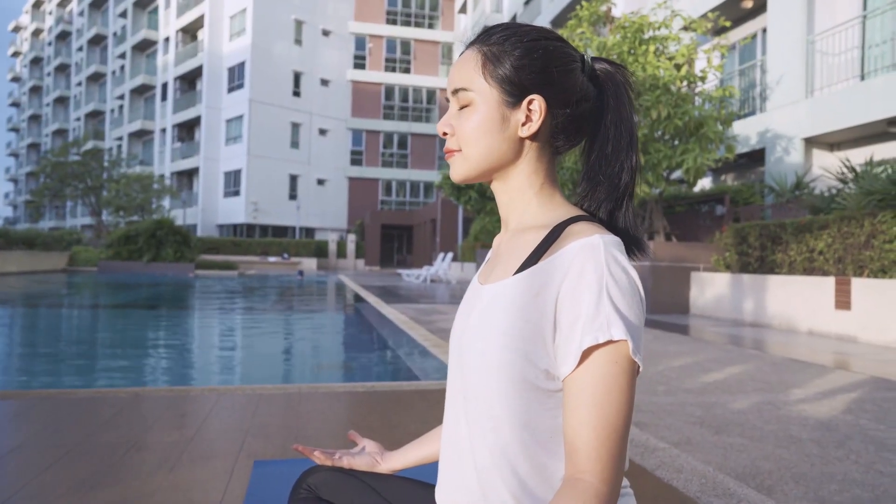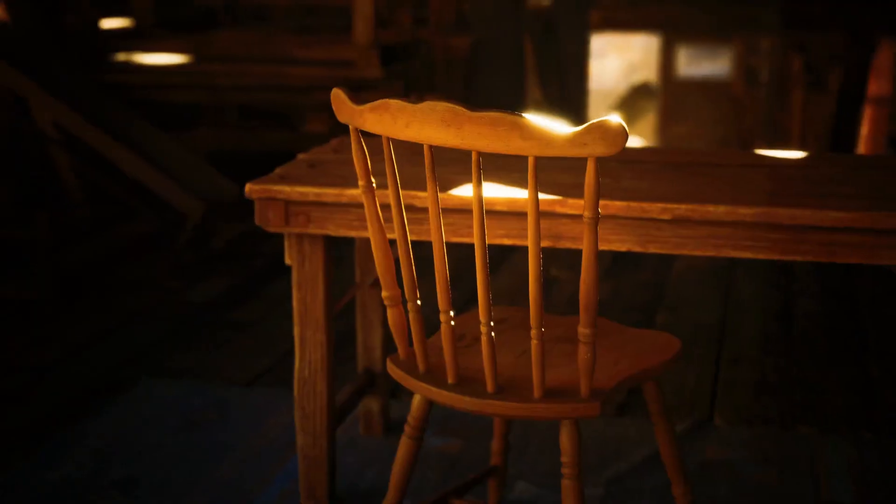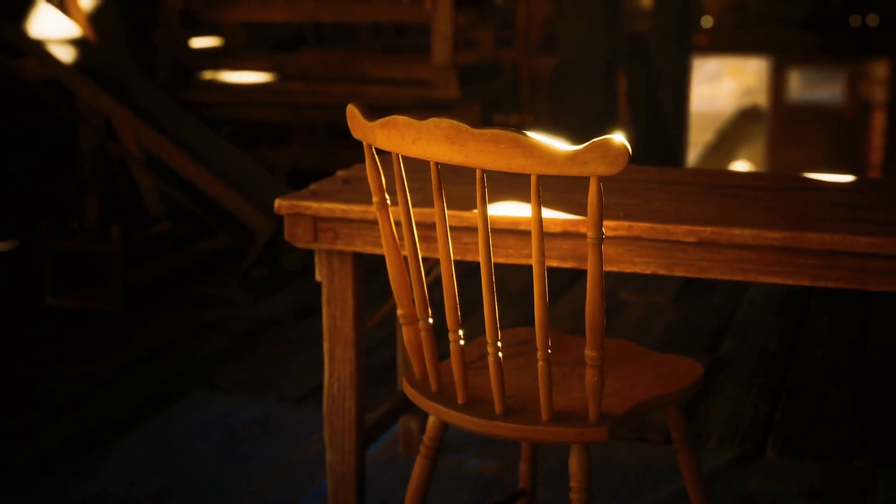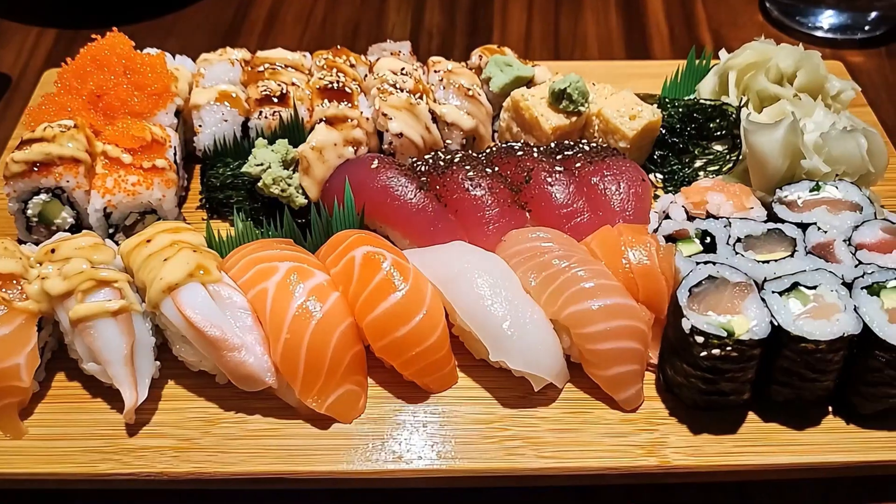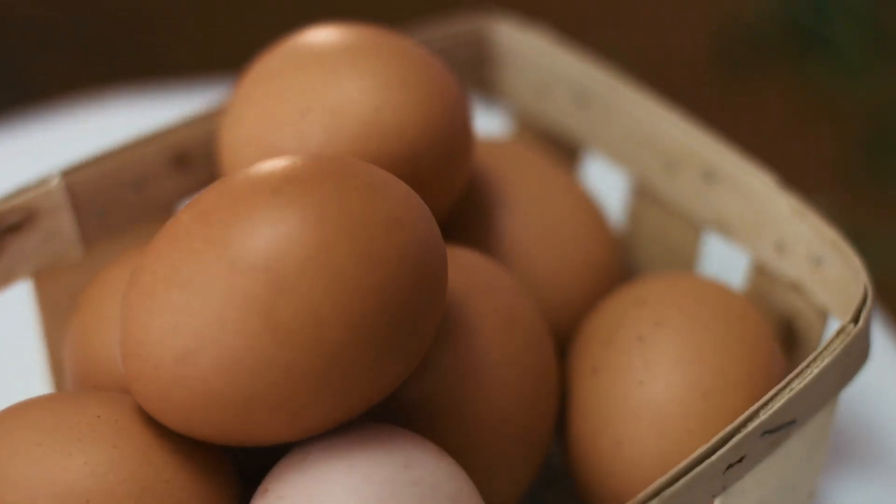You can synthesize vitamin D through sun exposure—about 10 to 30 minutes daily. But if you're living where the sun hides more than it shines, or if you're always indoors, then fatty fish, salmon, sardines, fortified milk, and eggs are your best bet.